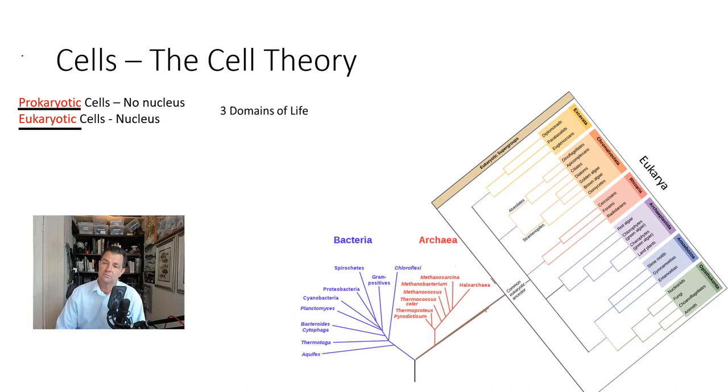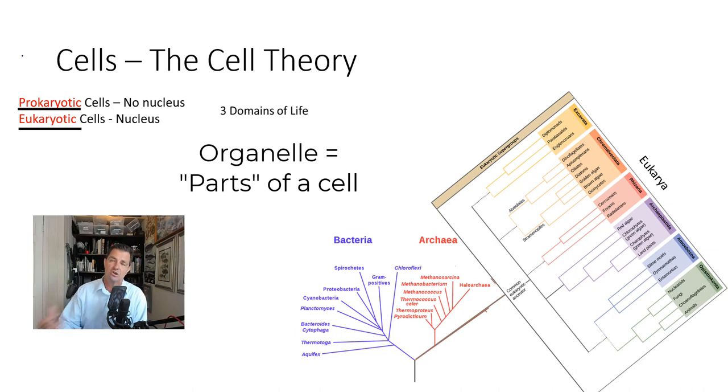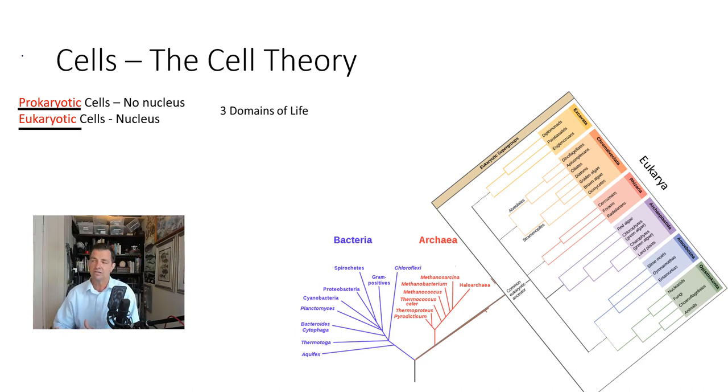You might also recall that we talked about the cell theory that all living things are composed of cells. You can break cells down into smaller parts, which we'll do today. Those parts themselves can be broken down. But the parts themselves do not meet the criteria of being alive. They have some of the components of being alive, but not all of them. Maybe they can reproduce, but they don't utilize energy. Or maybe they utilize energy, but can't evolve and can't change over time or respond to stimuli.